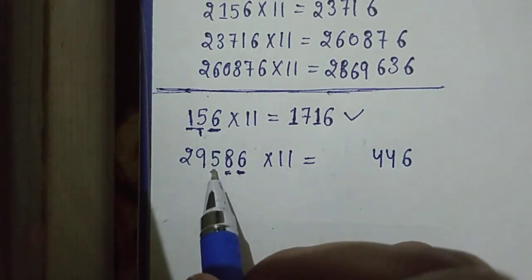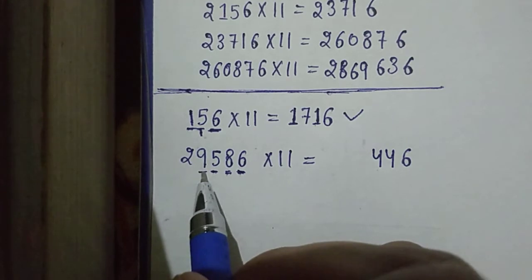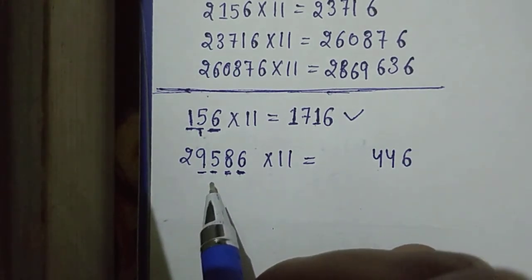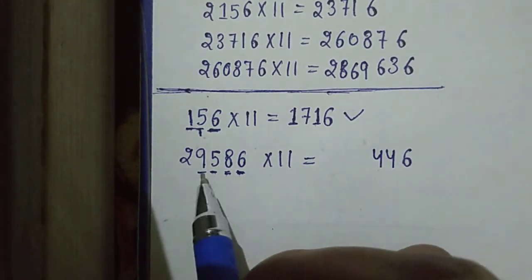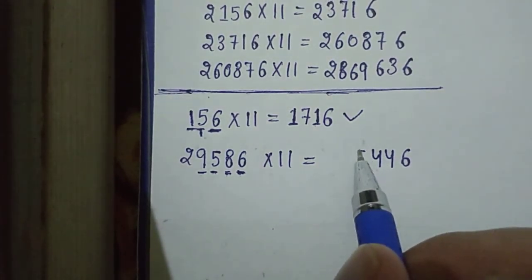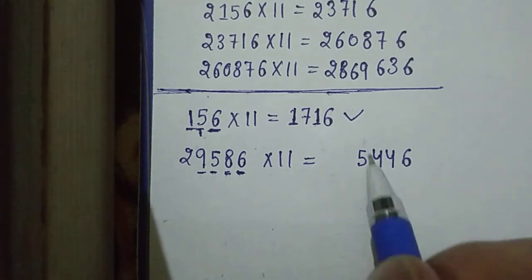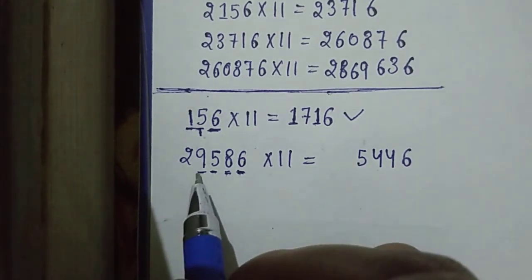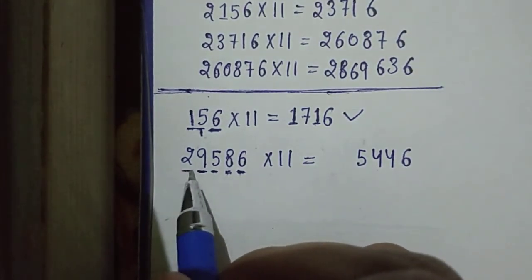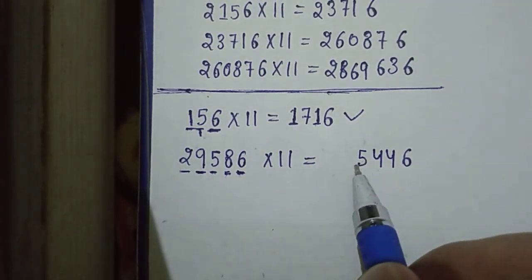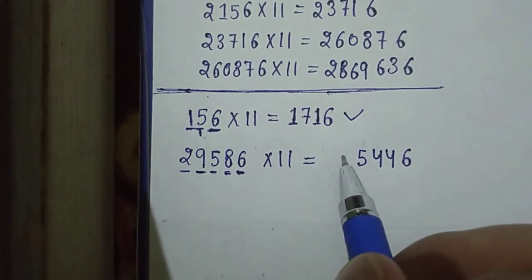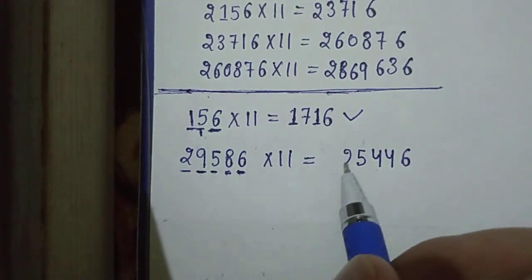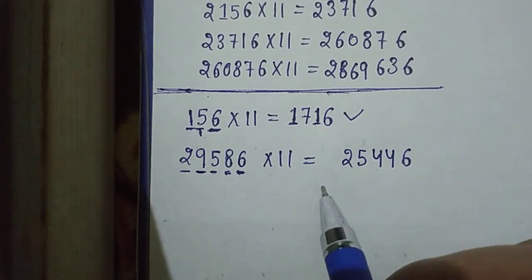Then, 5 plus 9 is equal to 14 and 1 is carry. Then, it is equal to 15. Then, 5 at here and 1 as carry. Then, 9 plus 2 is equal to 11. Then, 2 at here and 1 is carry.